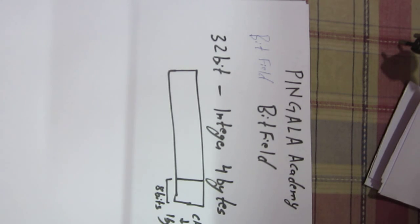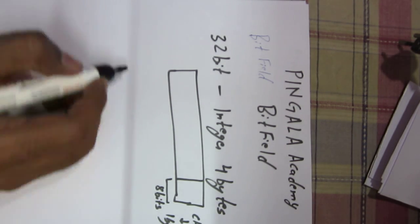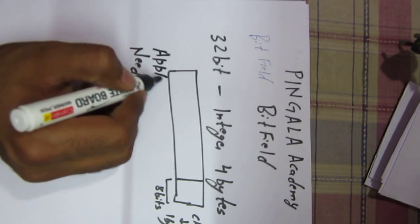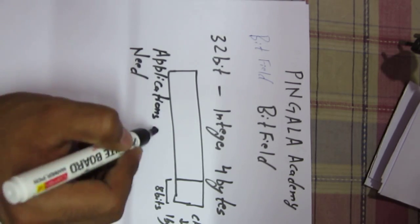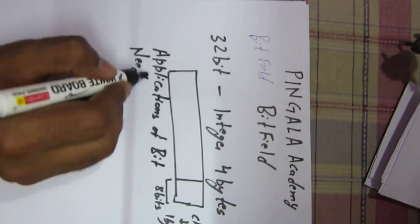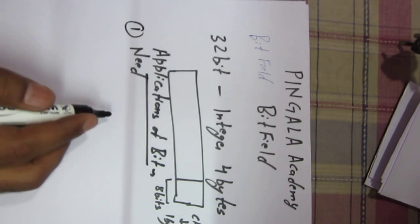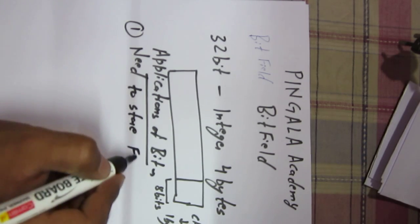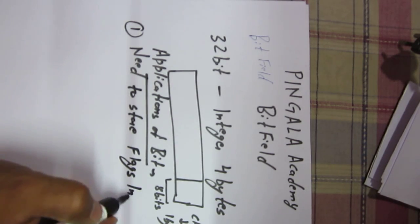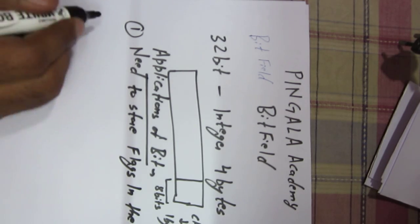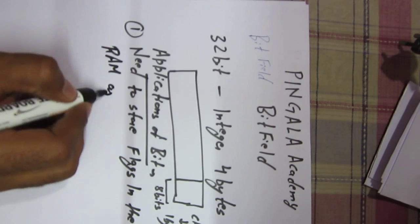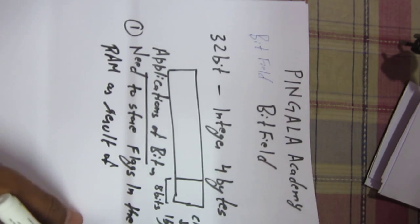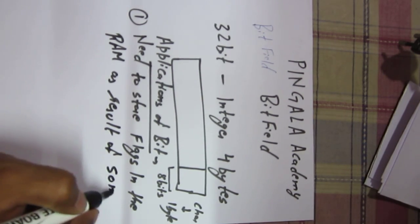Let's suppose we need to store flags. Right now we are discussing the applications of bit fields. The application is: suppose we need to store flags in the RAM as a result of some calculation.